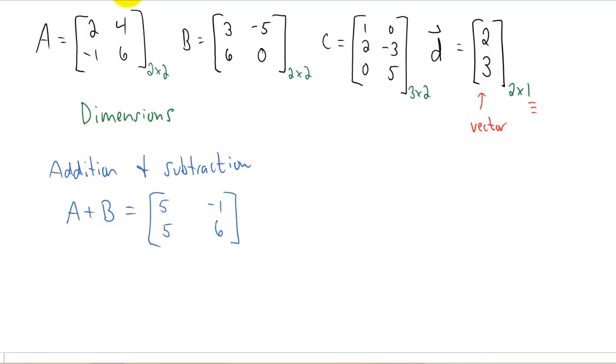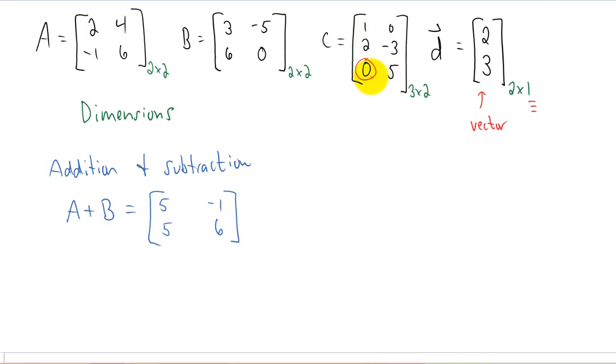And there I went using a vocabulary word. Each number inside of a matrix is called an element. This element right here would be called element 3, 1. And it's typically denoted with a lowercase letter and the two numbers as a subscript. Just in case there's any confusion, this element negative 3 in this matrix over here would be denoted as lowercase c, 2, 2. So addition and subtraction is pretty straightforward.